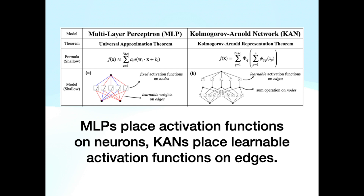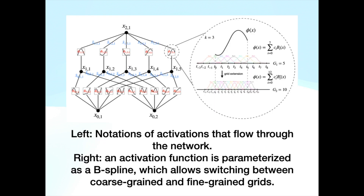KANs place learnable activation functions on edges. On the left, notations show activations that flow through the network. On the right, an activation function is parameterized as a B-spline, which allows switching between coarse-grained and fine-grained grids.